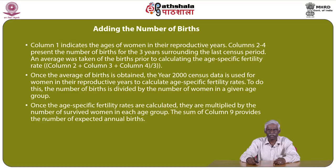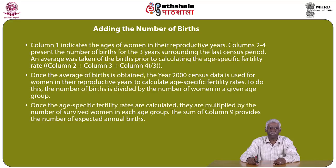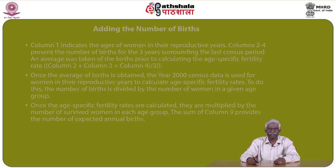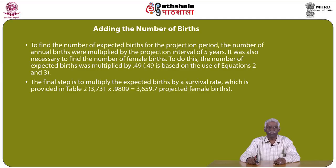Column 1 indicates the age of women in their reproductive years. Columns 2 to 4 present the number of births for the 3 years surrounding the last census period. An average is taken by adding columns 2, 3, and 4 and dividing by 3. The 2000 census data is then used for women in reproductive years to calculate age-specific fertility rates by dividing births by the number of women in each age group. The calculated rates are multiplied by survived women in each age group. The sum of column 9 gives expected annual births, multiplied by 5 years to get births over the projection period.